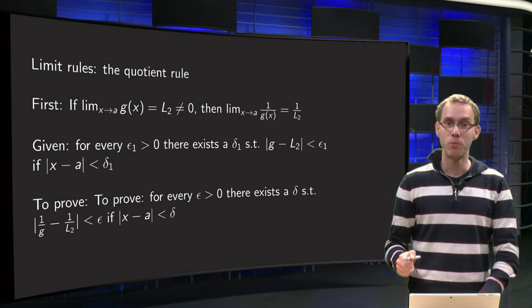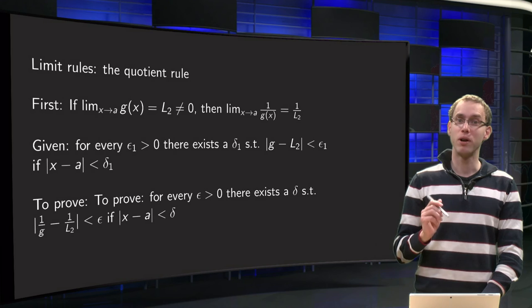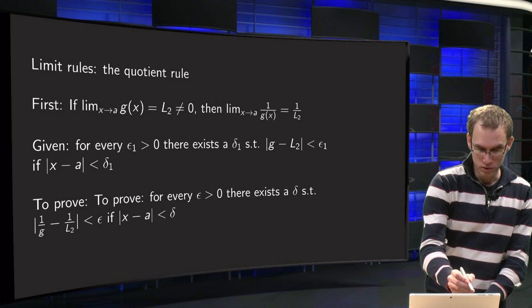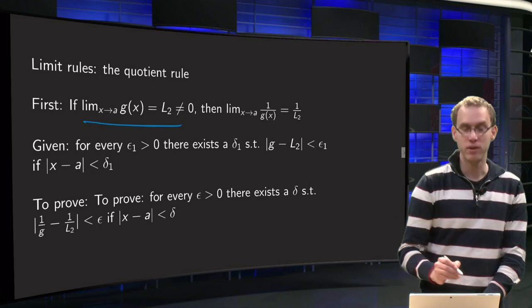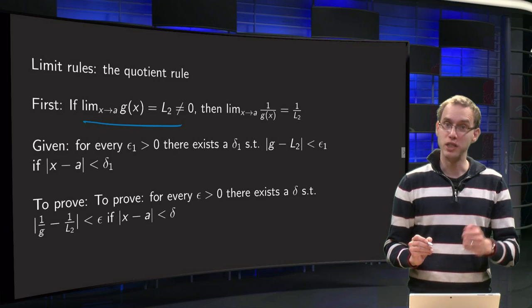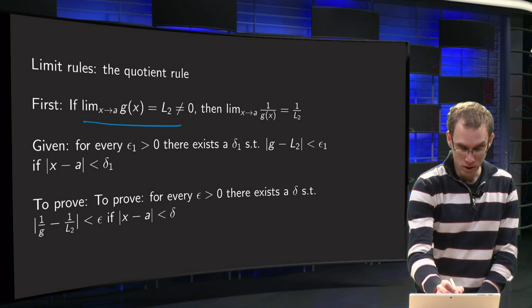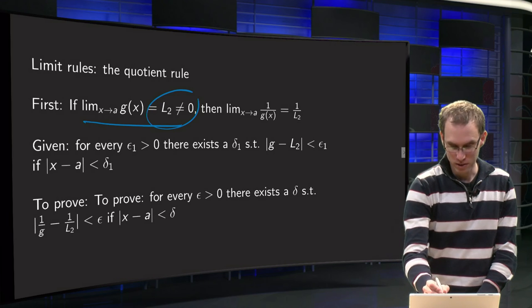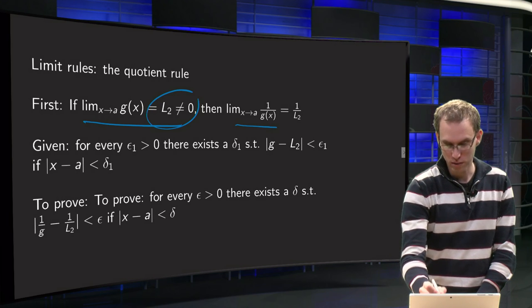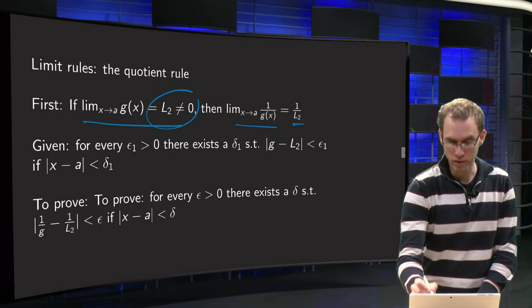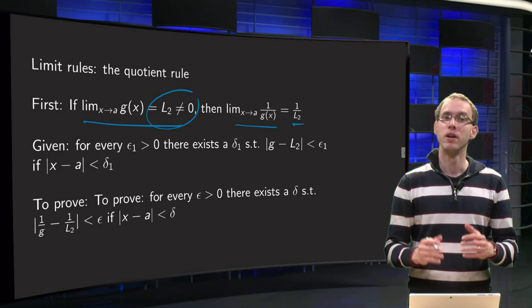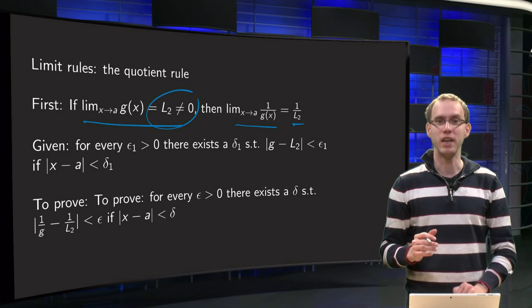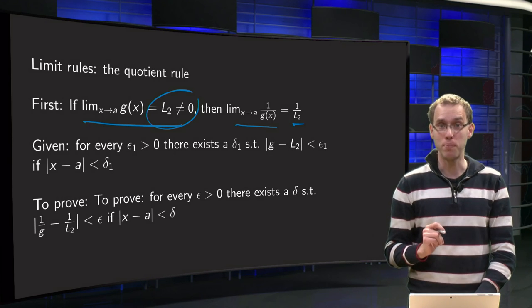So, the quotient rule — what are we going to prove first? We are going to prove this first: if the limit as x approaches a of g(x) equals L₂, non-zero, then the limit as x approaches a of 1 over g(x) equals 1 over L₂. And once we have done this, the quotient rule will be easy, but this will be the hard part.